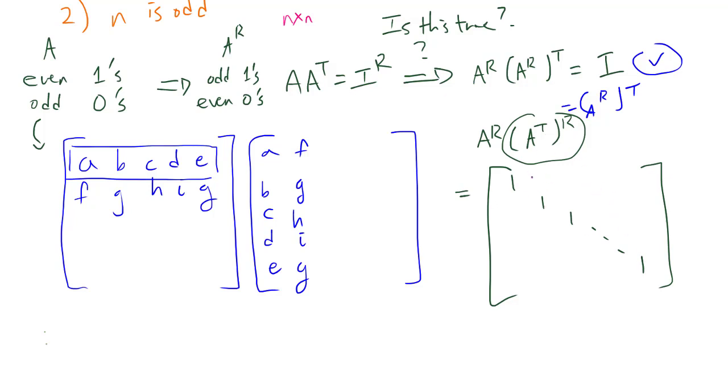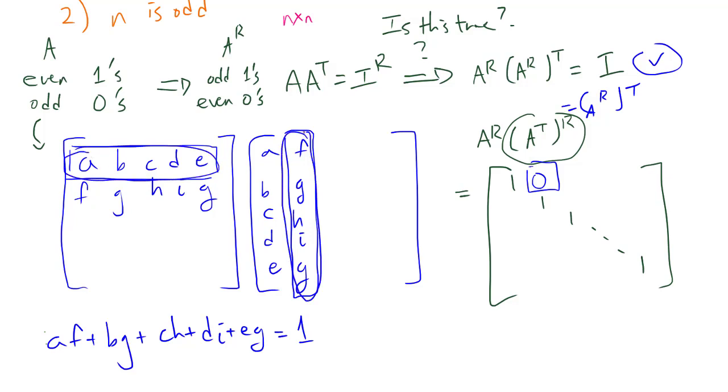So we have ones on the diagonal, but really what's not obvious is whether we should have zeros everywhere else. We know that if you took a dot product of two different rows, A, B, C, D, E and F, G, H, I, J, then A·F + B·G + C·H + D·I + E·J is actually a one. Now, our question is if you switch zeros and ones and you take a dot product, do we now get a zero? First of all, realize that switching zeros and ones can simply be accomplished by just adding one to every entry.